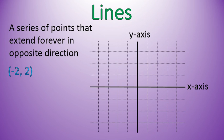So an example of that would be if I were to plot the point negative 2, positive 2, right there, and then the point 0, positive 1, right there, and the point 2, 0, right there. These are three points that are in a straight trajectory, and a line would be what we draw through those points extending forever in both directions. So this is an example of a line.